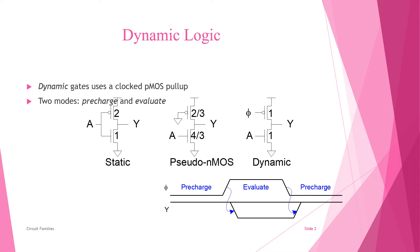In the output section we have two modes present: one is pre-charge and another one is evaluation. In the pre-charge mode, the pull-down network is going to the ON condition. In the pre-charge time, the pull-down network — which is the NMOS transistor side — the pull-down network output below the output section is going to ON condition.